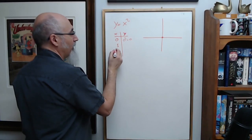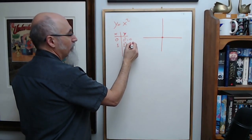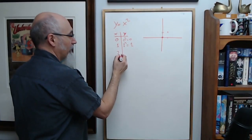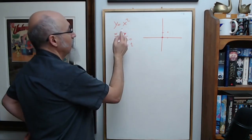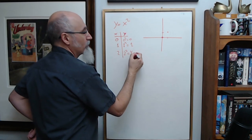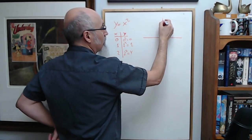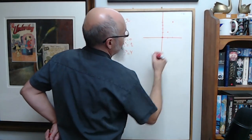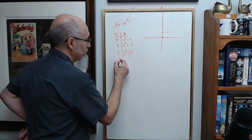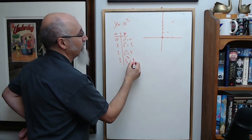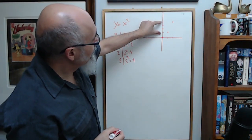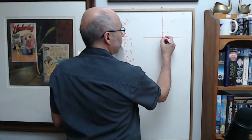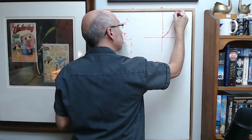When x is 1, y equals 1 squared equals 1, giving point (1, 1). When x is 2, y equals 2 squared equals 4, giving point (2, 4). When x is 3, y equals 3 squared equals 9 — we're way up the graph at (3, 9).